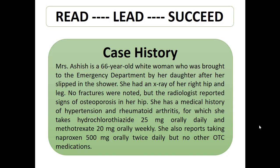She has a medical history of hypertension and rheumatoid arthritis, for which she takes hydrochlorothiazide 25 mg orally daily and methotrexate 20 mg orally weekly. She also reports taking naproxen 500 mg orally twice daily, but no other over-the-counter medication.